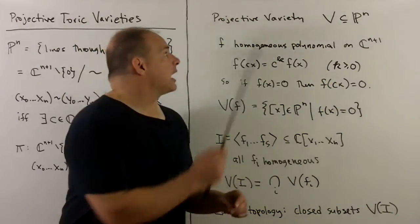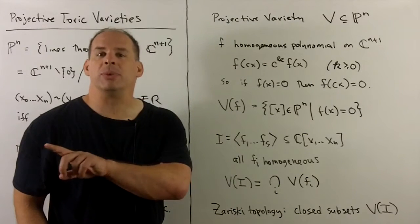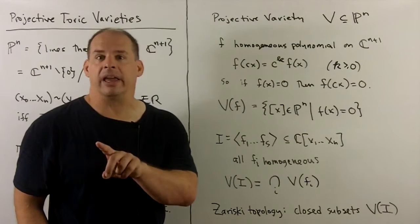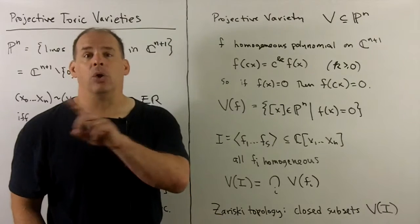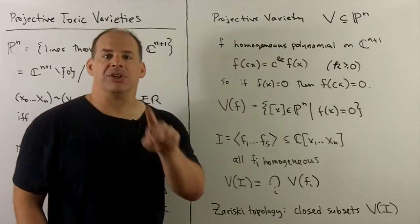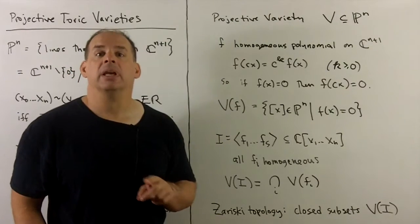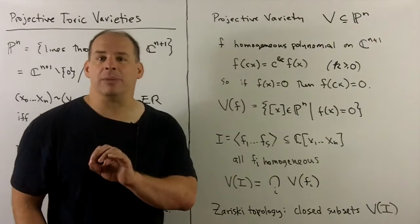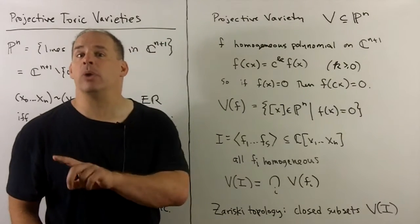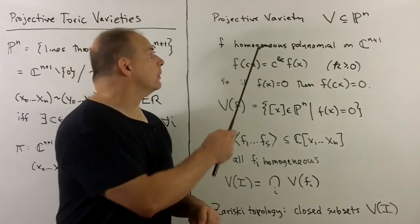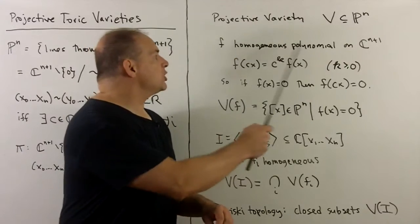For complex projective varieties, we take the same approach as in the affine case. There, we start with polynomials, take zero sets, and then intersect. Here, for things to be well-defined in projective space, we have to start with homogeneous polynomials. Recall a homogeneous polynomial: if we take our point, multiply by a scalar, and then evaluate, we're allowed to pull the scalar out by some power — that's what it means to be homogeneous.